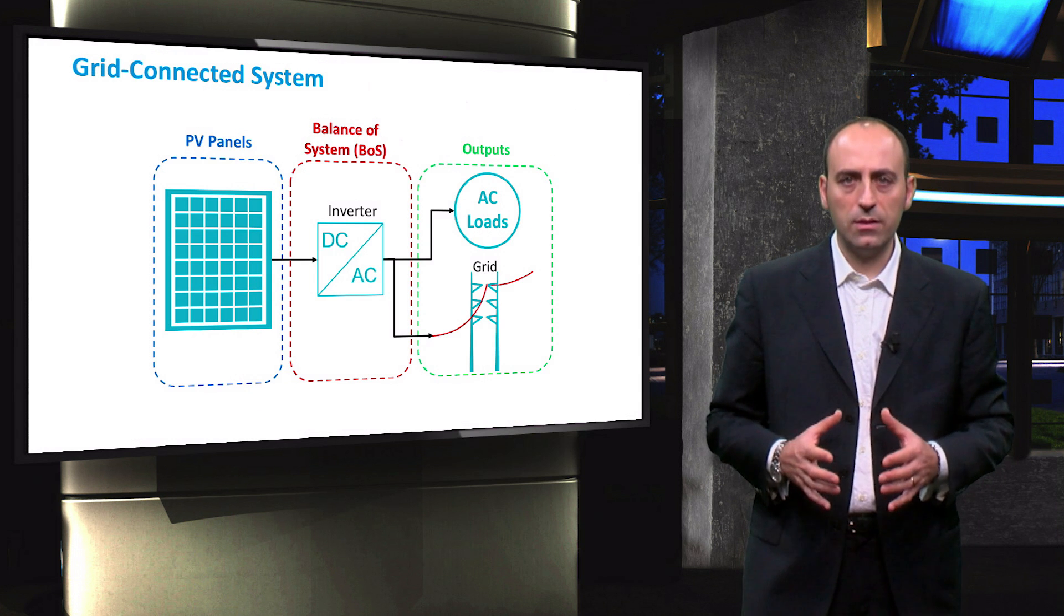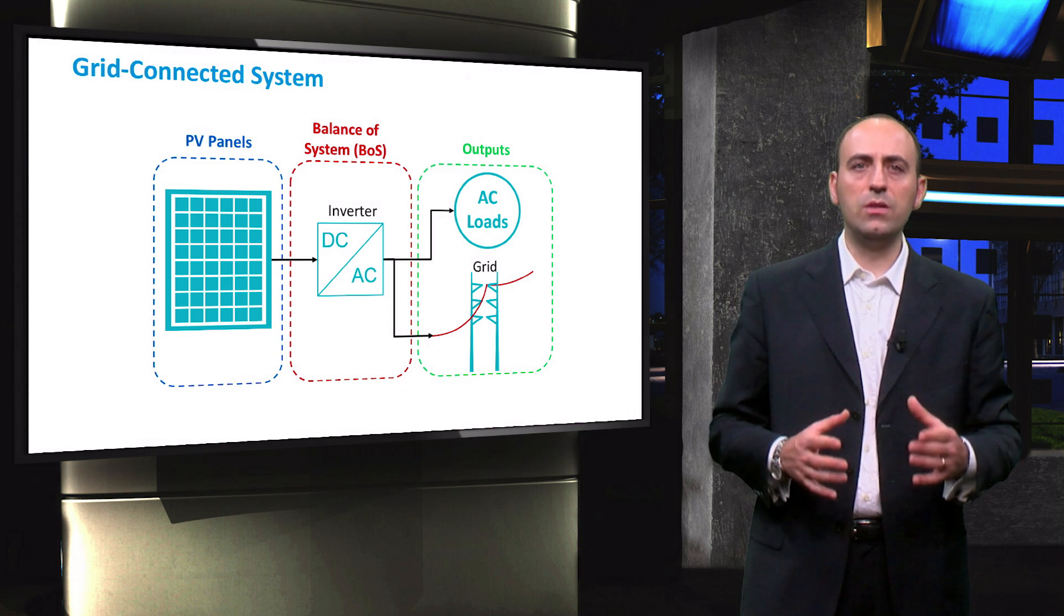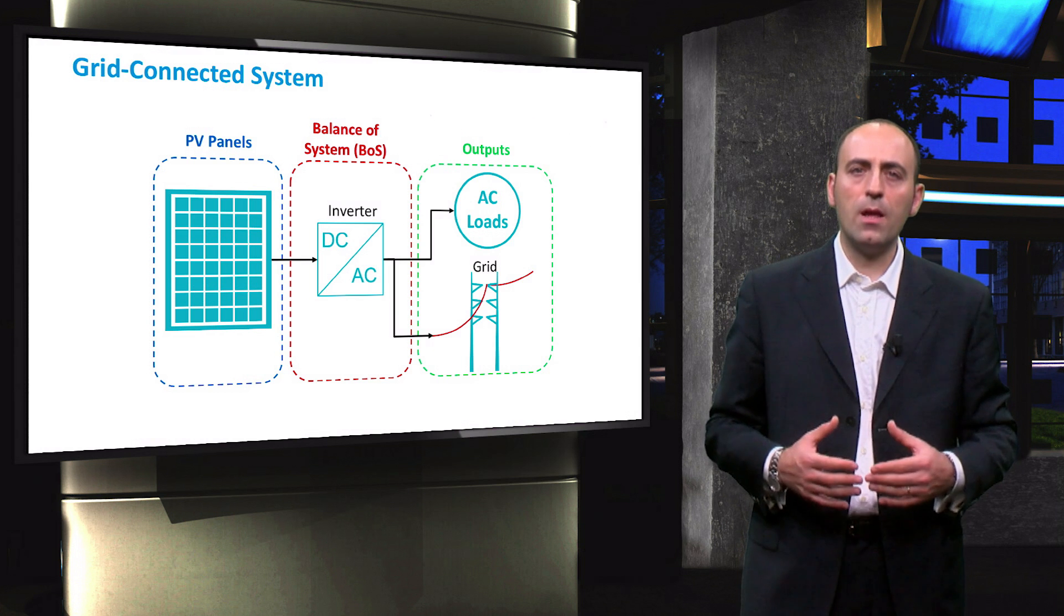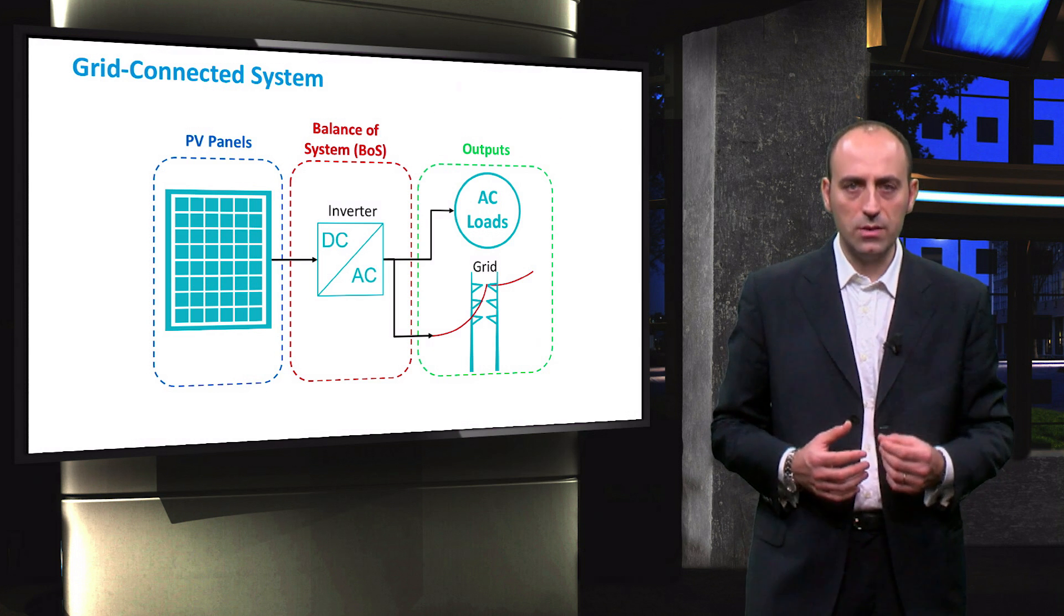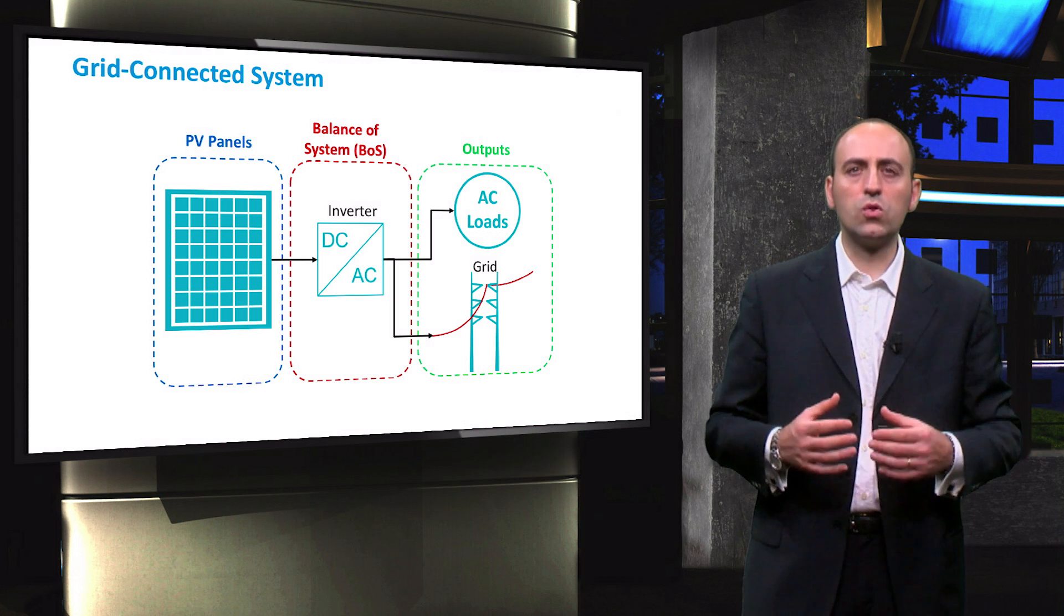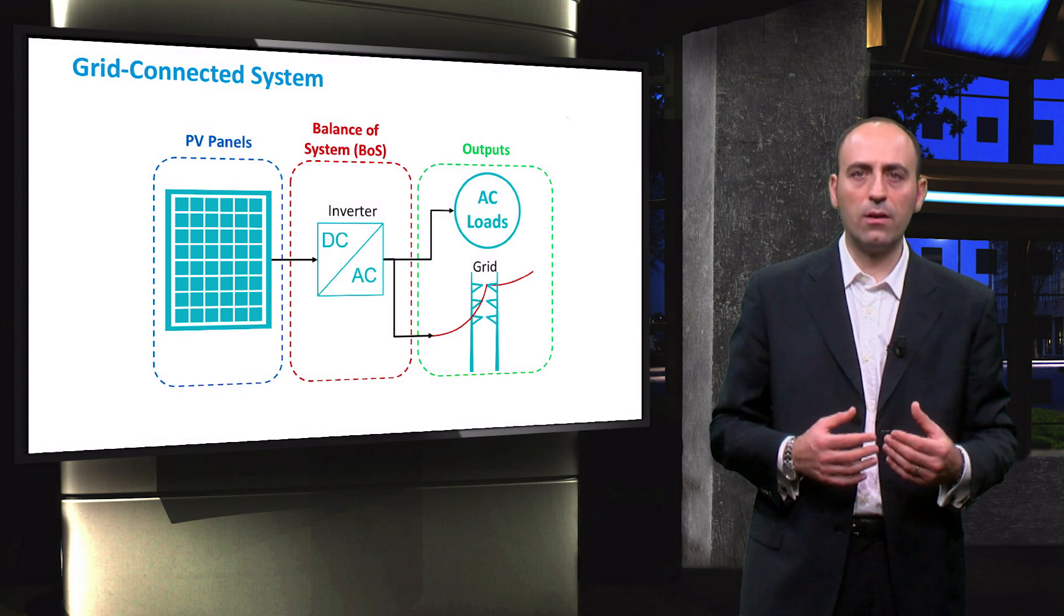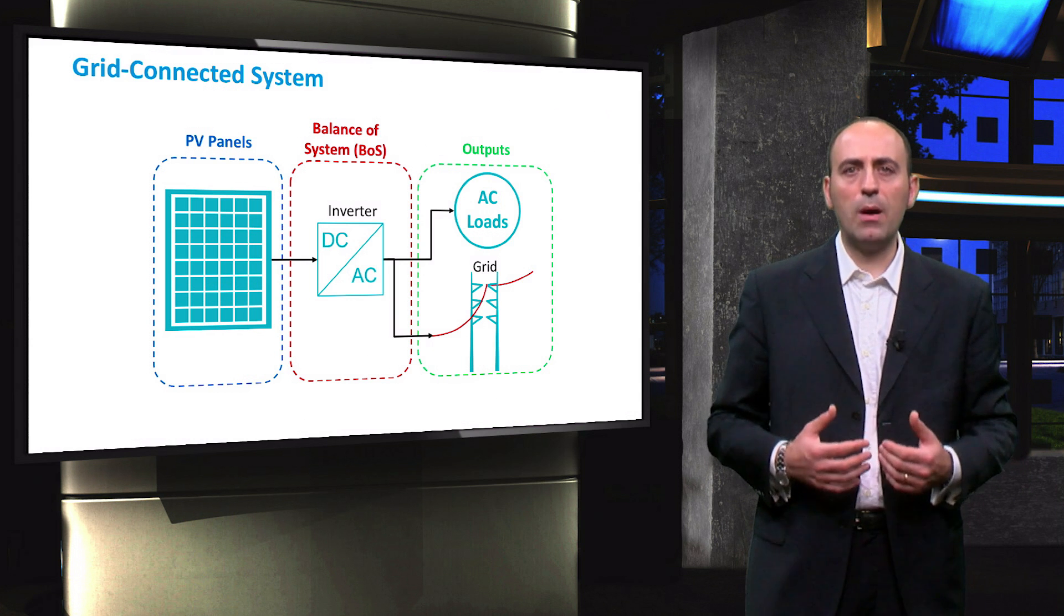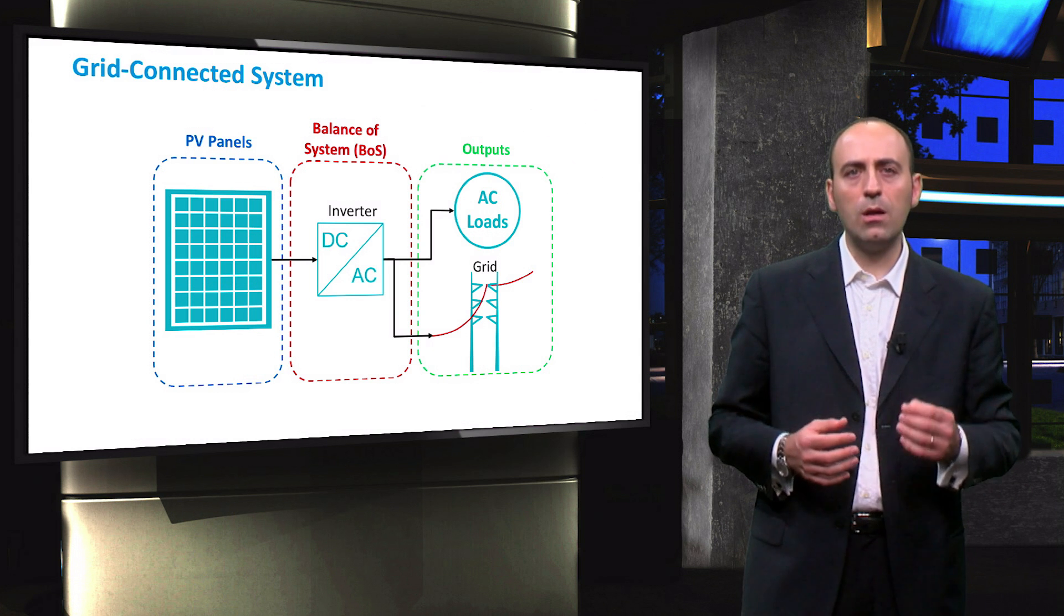In a grid-connected system, the inverter is connected directly to the PV array and converts the DC electricity coming from the PV array into AC electricity. Besides, such an inverter usually contains a maximum power point tracker system. As such an inverter is connected to the electricity grid, it must also synchronize with the grid, meaning that the phase angle of the AC signal coming from the inverter must equal to that of the grid. In order to increase power quality of the grid, the injected signal should also have a minimal harmonic content.